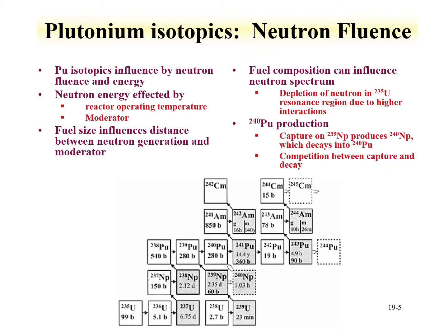The isotopic distribution of plutonium is also influenced by neutron energy and fluence. The energy of neutrons in a reactor can be influenced by the reactor operating temperature and the moderator, so signatures from plutonium isotopics driven by neutron energy can tell one about reactor operating temperature and moderator type. The fuel size also influences the distance between neutron generation and the moderator, imparting signatures into the plutonium isotopics. Fuel high in uranium-235 will have a depletion of neutrons in the resonance region, since those neutron energies are captured by U-235 for fission or capture. A low fluence tends to indicate weapons-grade plutonium, because at high fluence there is a higher probability of capturing a neutron onto Pu-239 creating neptunium-240, which decays to Pu-240.